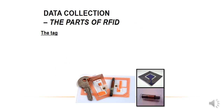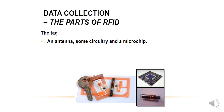The tag has a little antenna and some circuitry — resistors and so on — and a microchip, which acts as a little brain, along with memory which can store data.